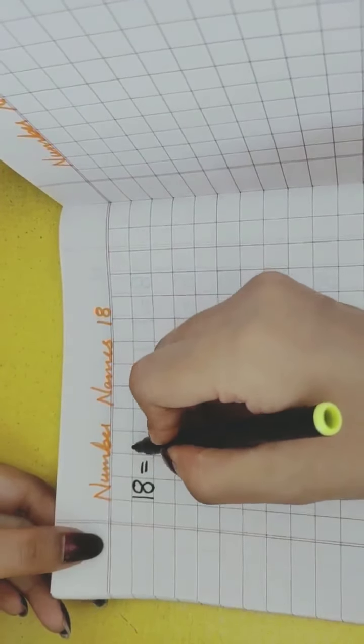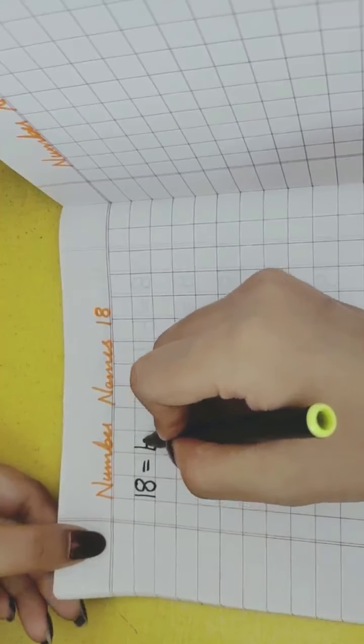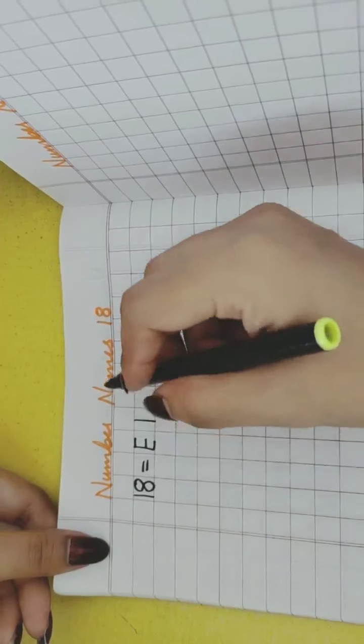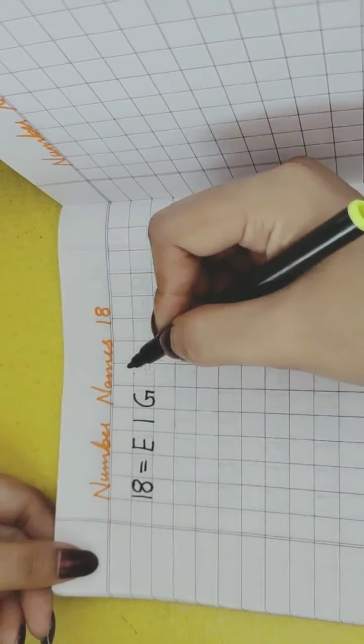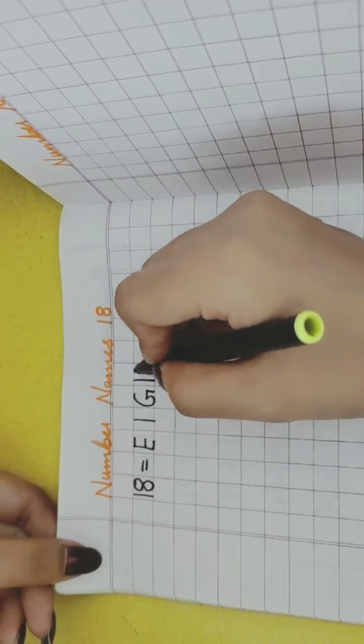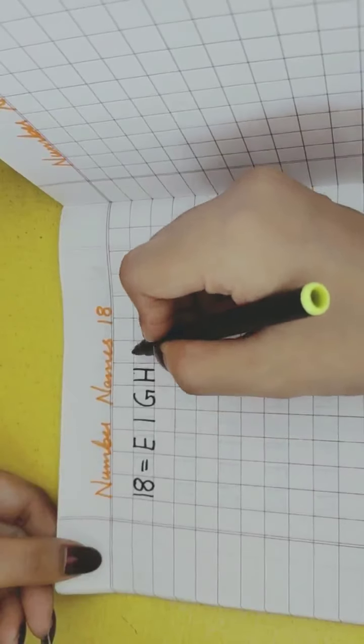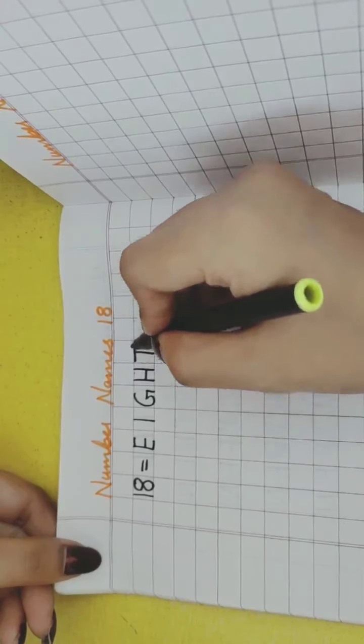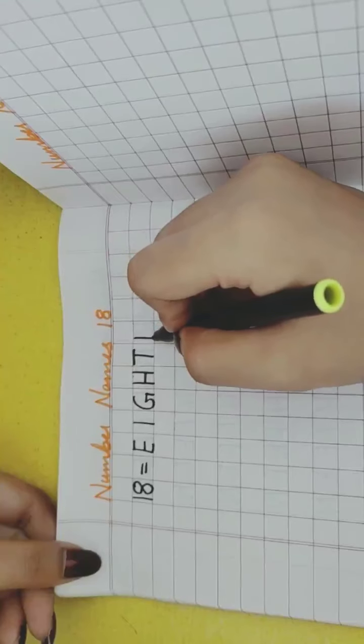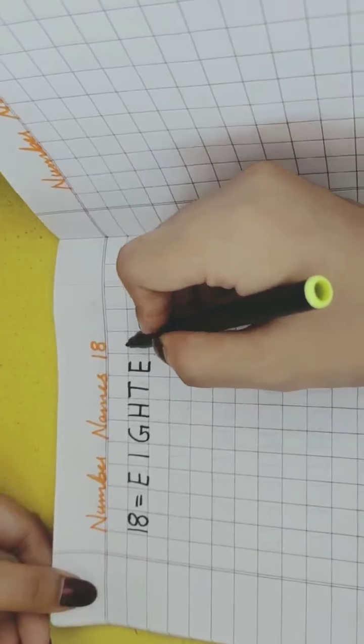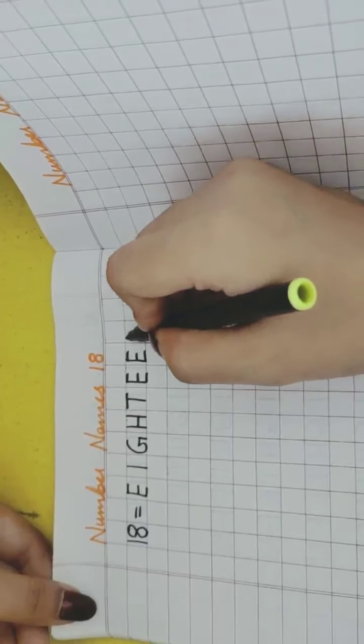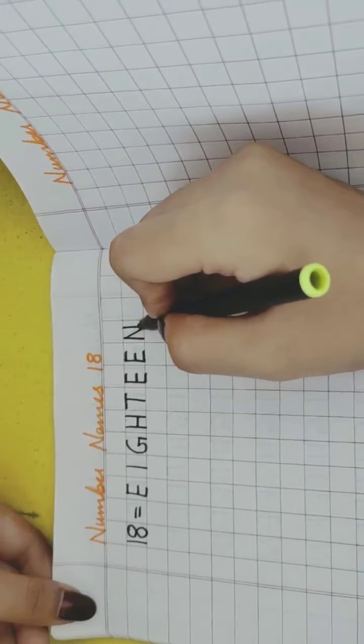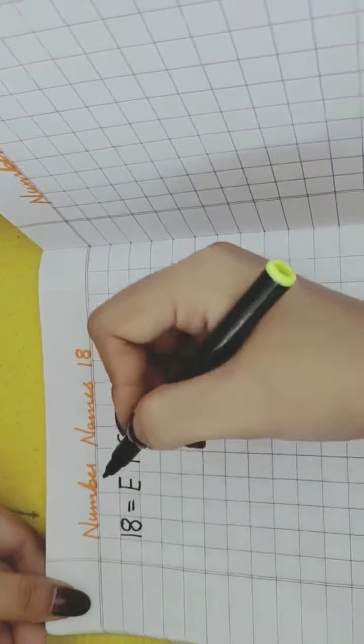18's spelling is E, I, G, H, T, E, E, N.